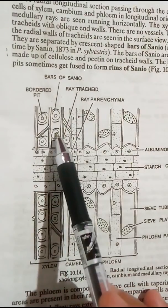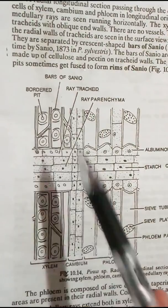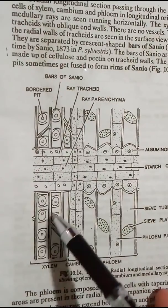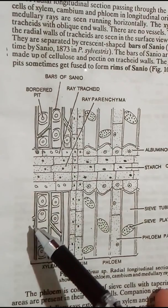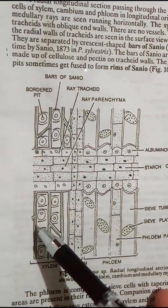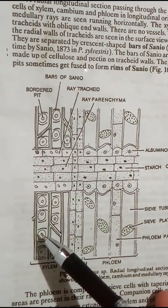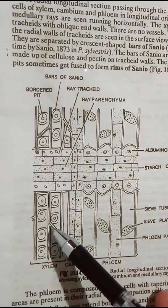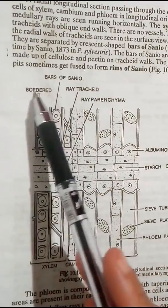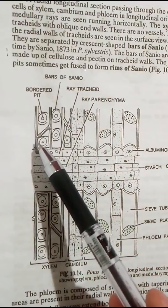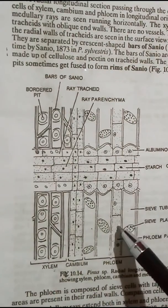The ray tracheids have bordered pits on their lateral end walls, as you can see here on both sides of the tracheids. This is to facilitate radial translocation — the movement of materials from the pith to the cortex and epidermis. So the presence of bordered pits in ray tracheids facilitates this translocation.